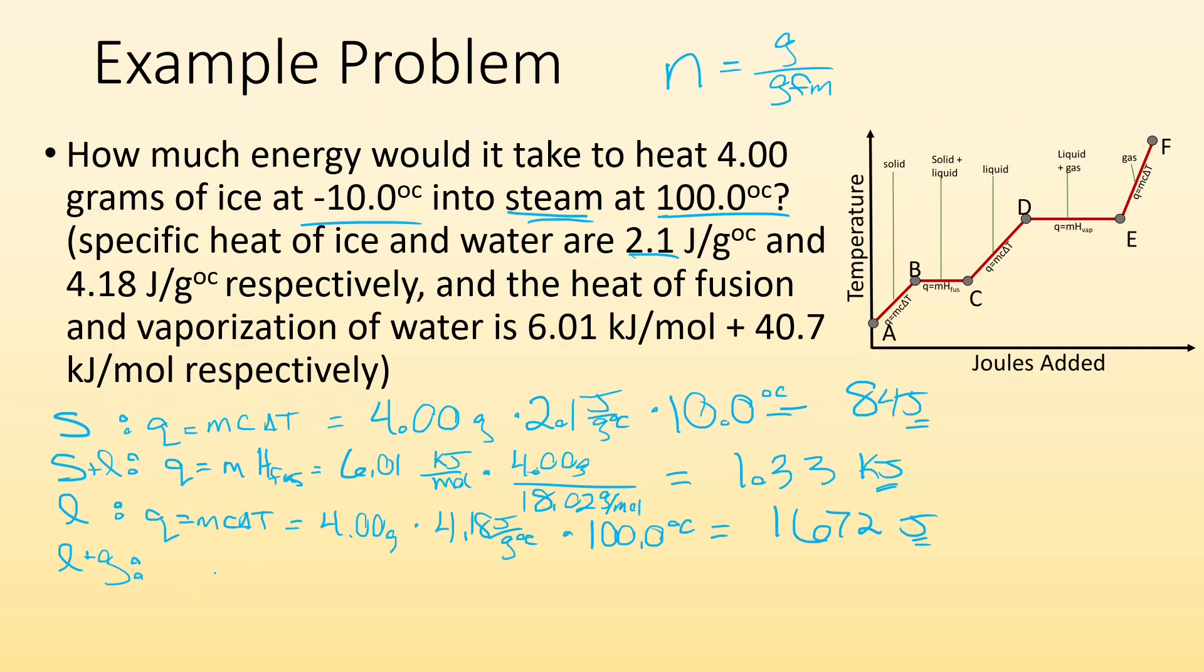And then liquid to gas. Once I'm at the boiling point, I'm going to go back to the Q equals the heat of vaporization times, in this case, it's going to be moles. So I go, all right, well, my heat of vaporization is 40.7 kilojoules per mole times, well, how many moles do I have? Well, it's going to be that 4.00 grams divided by 18.02 grams per mole for H2O. And then when I do that math, I end up with 9.03 kilojoules.